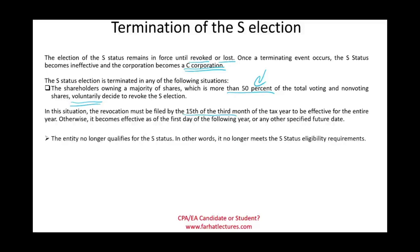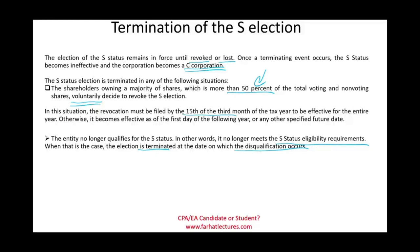Involuntary termination occurs when the corporation no longer meets the S status eligibility requirements — for example, exceeding 100 shareholders. Owners generally want to avoid this since they lose the benefit of pass-through taxation and become subject to double taxation. When disqualification occurs, the election terminates on the exact date the disqualifying event happens.